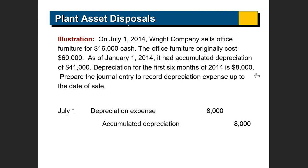Depreciation for the first six months of 2014 is $8,000. The furniture was sold on July 1st, which means from January 1st to June 30th they had depreciation of $8,000. So first they're going to record depreciation expense for those first six months. This is given to you — you don't have to calculate it. Debit depreciation expense and credit accumulated depreciation.